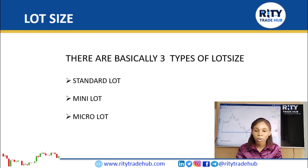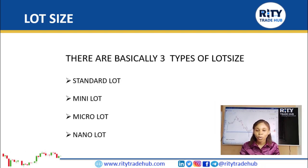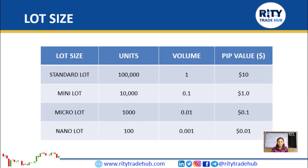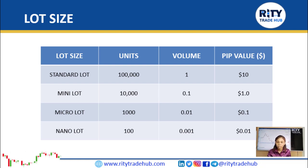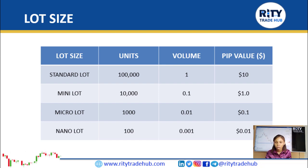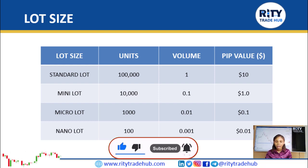There are basically four types of lot sizes: the standard lot, the mini lot, the micro lot, and the nano lot. The standard lot contains one hundred thousand units and is represented on MT4 by 1.0. The mini lot contains ten thousand units, the micro lot contains one thousand units, and the nano lot contains one hundred units.